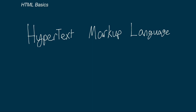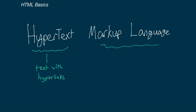Hey everybody, welcome back to Frontend Expert. In this video, we will be talking about the basics of HTML — going over what exactly it is, how we can use it, and what the syntax will look like. HTML stands for Hypertext Markup Language. Hypertext simply means text with links, or hyperlinks — links from one document on the web to another. A markup language is a language used to annotate some kind of content or text. In the case of HTML, we will annotate the content of our webpage to tell the browser what everything is.